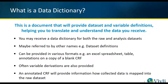You may receive a data dictionary for both the raw and analysis data sets. Depending on the company providing the data, the dictionary may be an Excel spreadsheet, a table, or annotations made on the copy of a blank CRF. Often, details of any variables that are derived are also provided. If an annotated CRF is provided, this will show how the data is mapped into a raw data set.